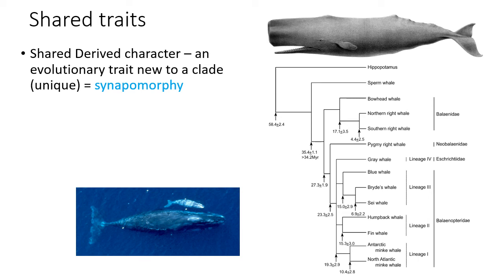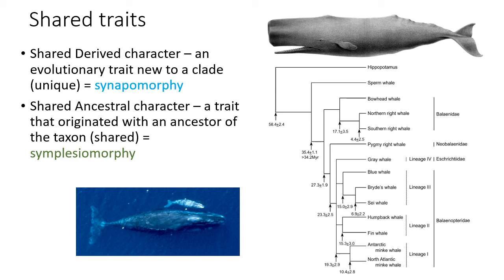A shared derived character is an evolutionary trait new to a clade — called a synapomorphy. A shared ancestral character is a trait that originated with an ancestor, shared by many, and thus not unique — called a symplesiomorphy. In the whale phylogeny, having a fluke (a large tail) is a symplesiomorphy because all whales share it as an ancestral character. An example of a synapomorphy would be baleen, shared by the family Balaenidae — a derived character used to group those species together.